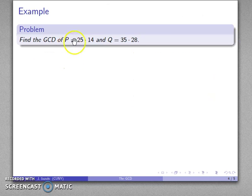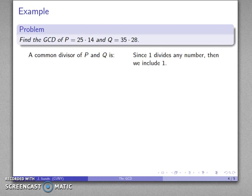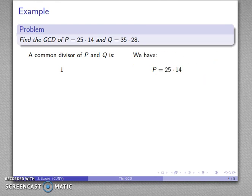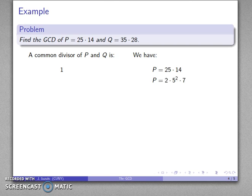So if I have p equals this and q equals this, we might try to do the same thing and find a common divisor. One divides both numbers because one divides every number, so we'll include 1. But 25 isn't prime, so we can't use the fundamental theorem of arithmetic, which means we should find the prime factorization of both numbers. p equals 25 times 14: 25 factors as 5 times 5, and 14 factors as 7 times 2, giving the prime factorization of p as 2 times 5 squared times 7.